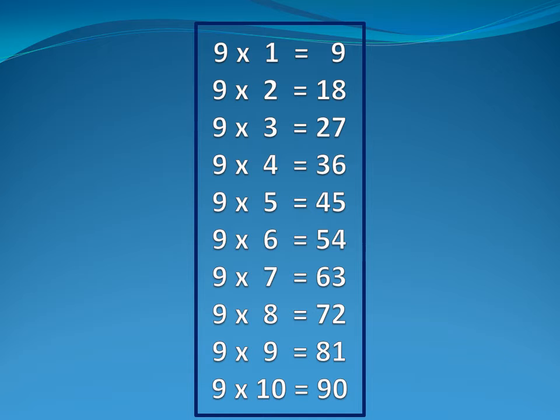Nine one is nine. Nine two is eighteen. Nine three is twenty-seven. Nine four is thirty-six. Nine five is forty-five.